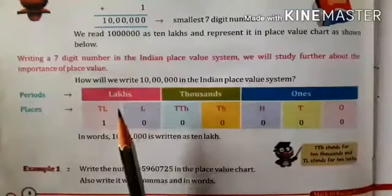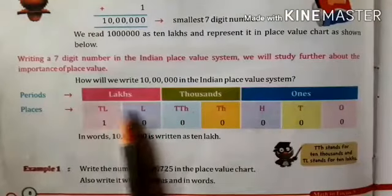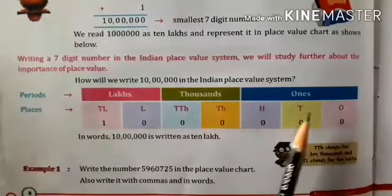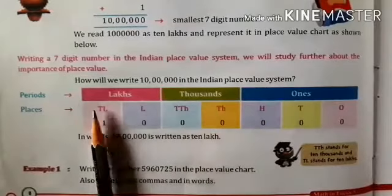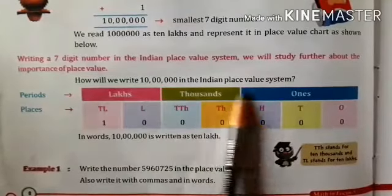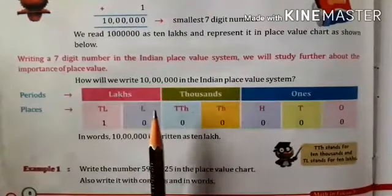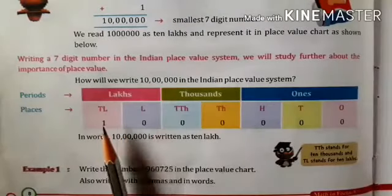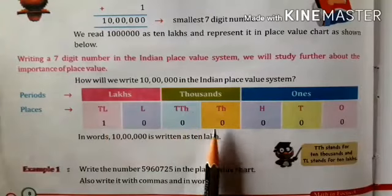Students, you can see here this is the Indian place value chart. These are the places: ones, tens, hundreds, thousands, ten thousands, lakhs and ten lakhs. And these are the periods: ones, thousands, lakhs. So we can write 10 lakh in this way in the Indian place value system.